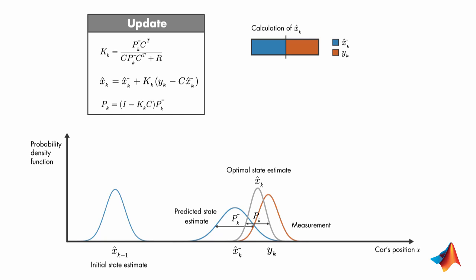By weighing the correction term, the Kalman gain determines how heavily the measurement and the a priori estimate contributes to the calculation of x hat k. If the measurement noise is small, the measurement is trusted more and contributes to the calculation of x hat k more than the a priori state estimate does.